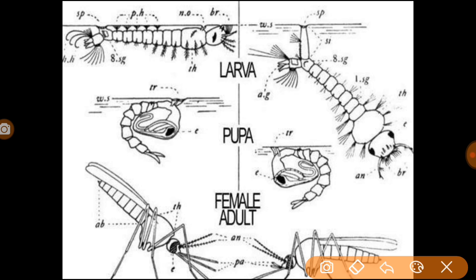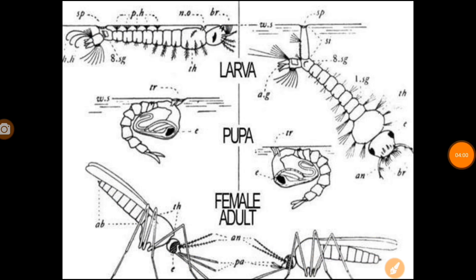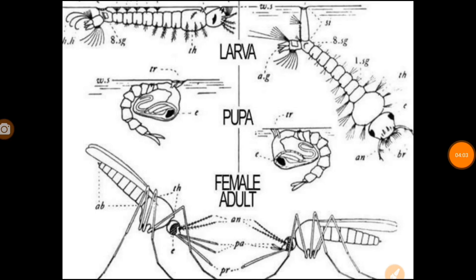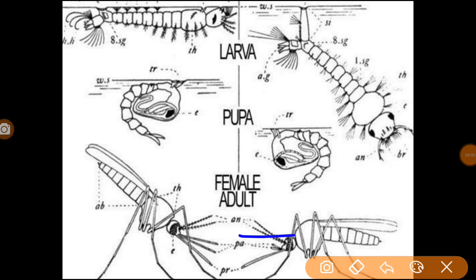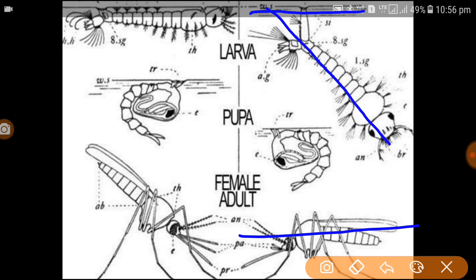In the larval stage the Anopheles is tilted — head downward, back upward — while in the adult stage when it sucks blood it is also tilted. For Culex and Aedes, the larval stage is horizontal. You can remember the difference by this method.